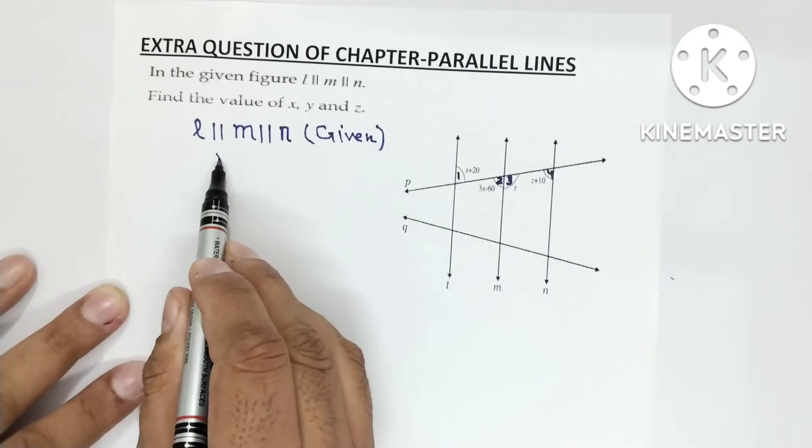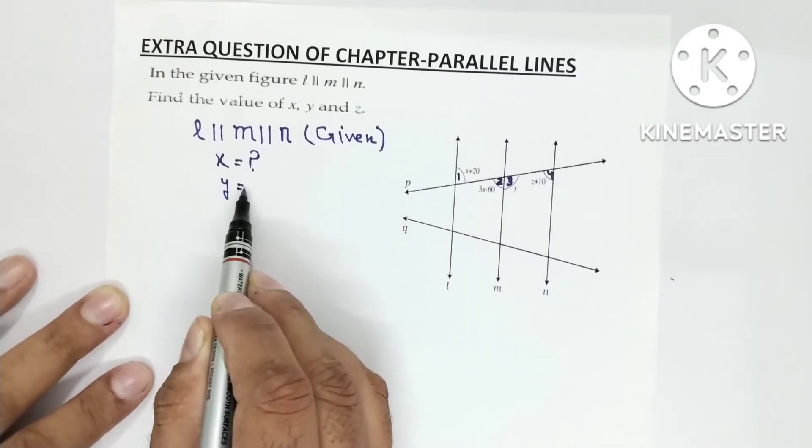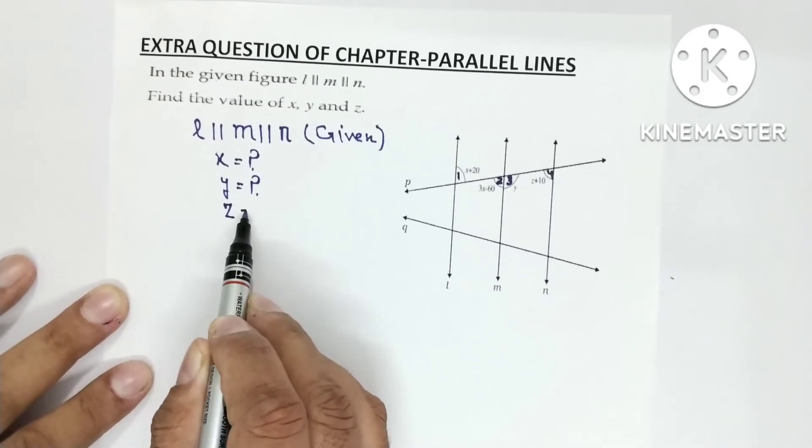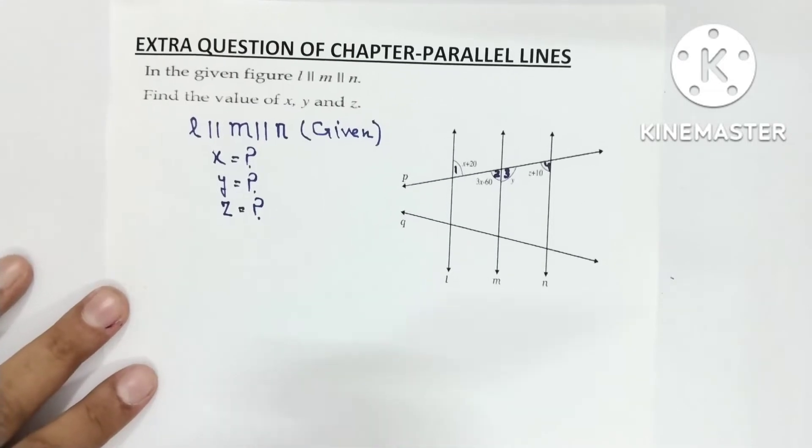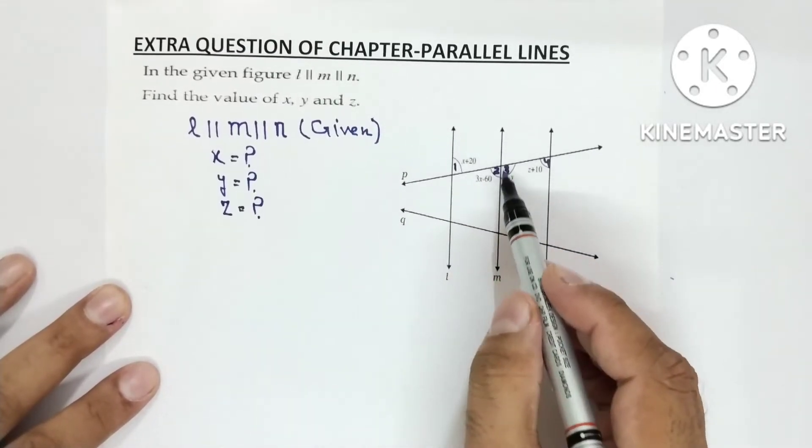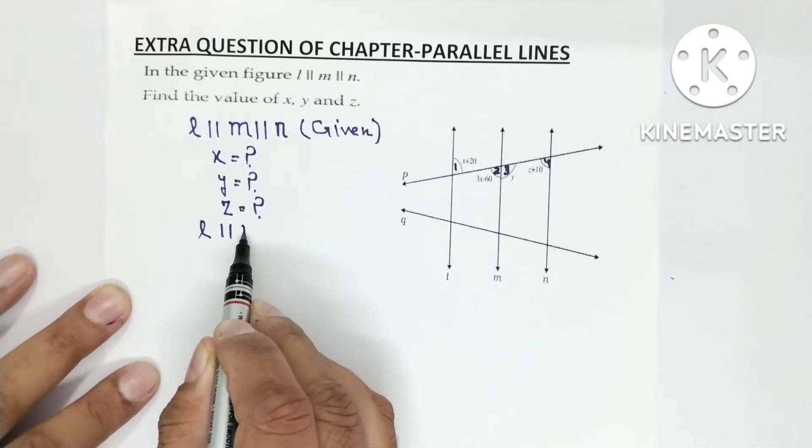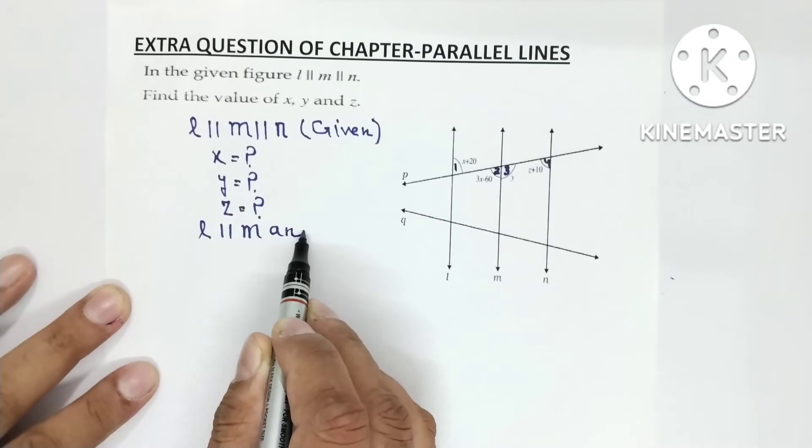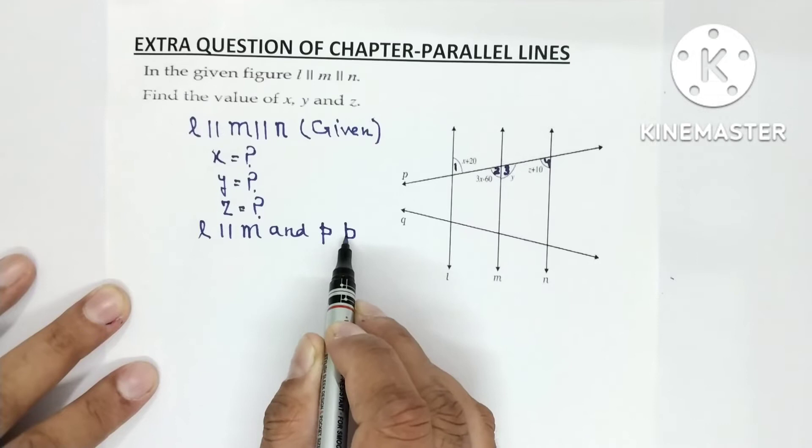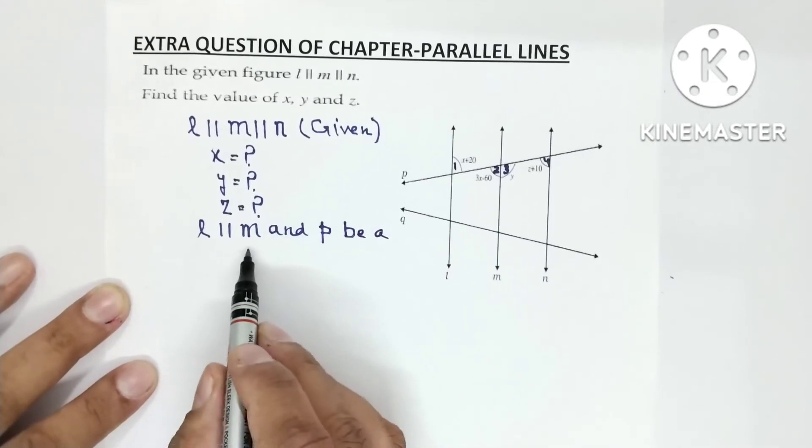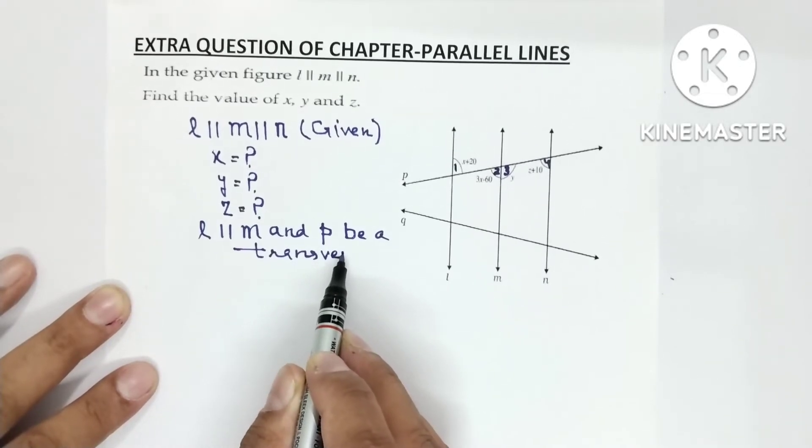Now, what we need to find out? One X, then Y and then Z. So all these three angles we have to find. Now, you can see here, this L is parallel to M. And we consider this P as transversal. So P be a transversal.